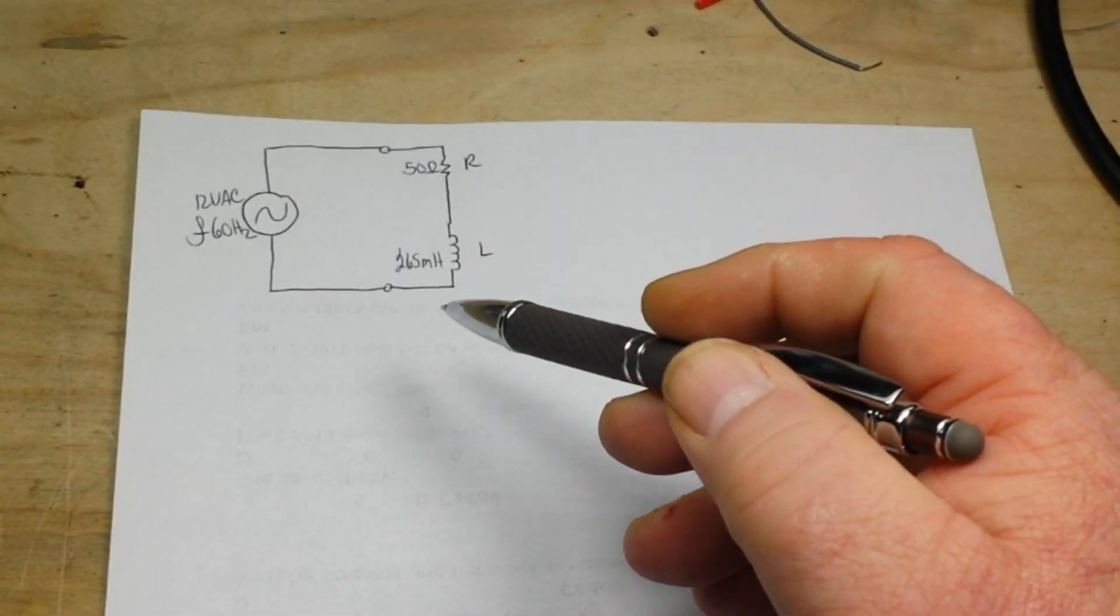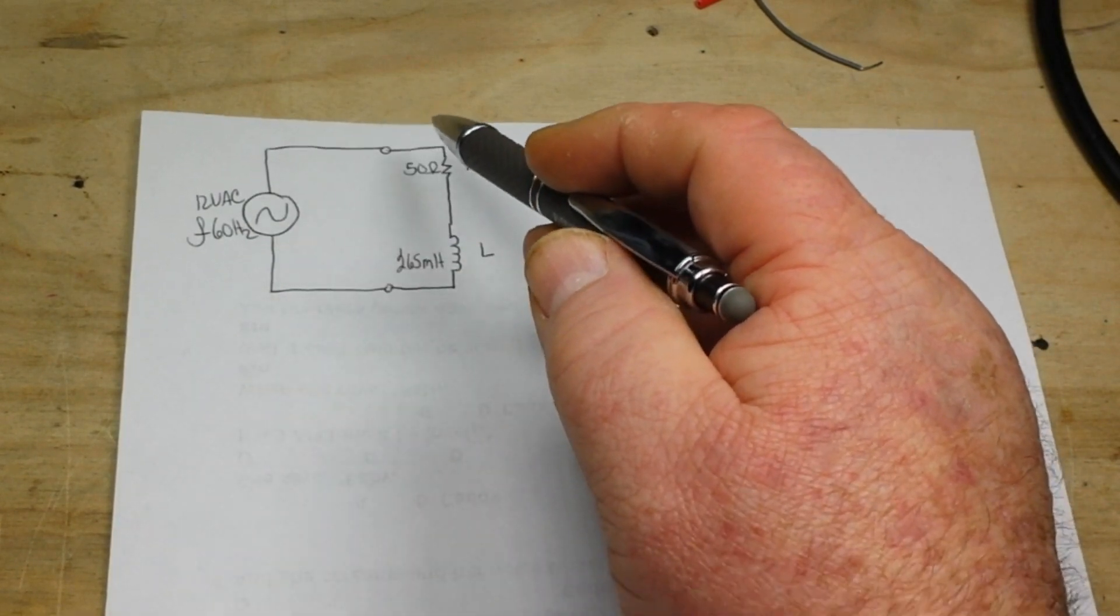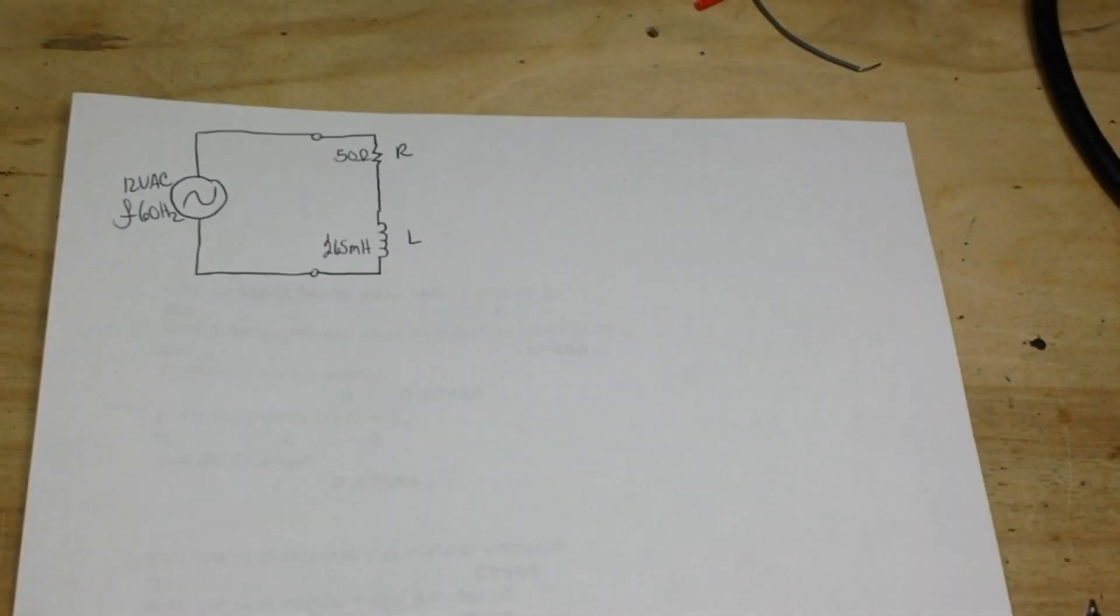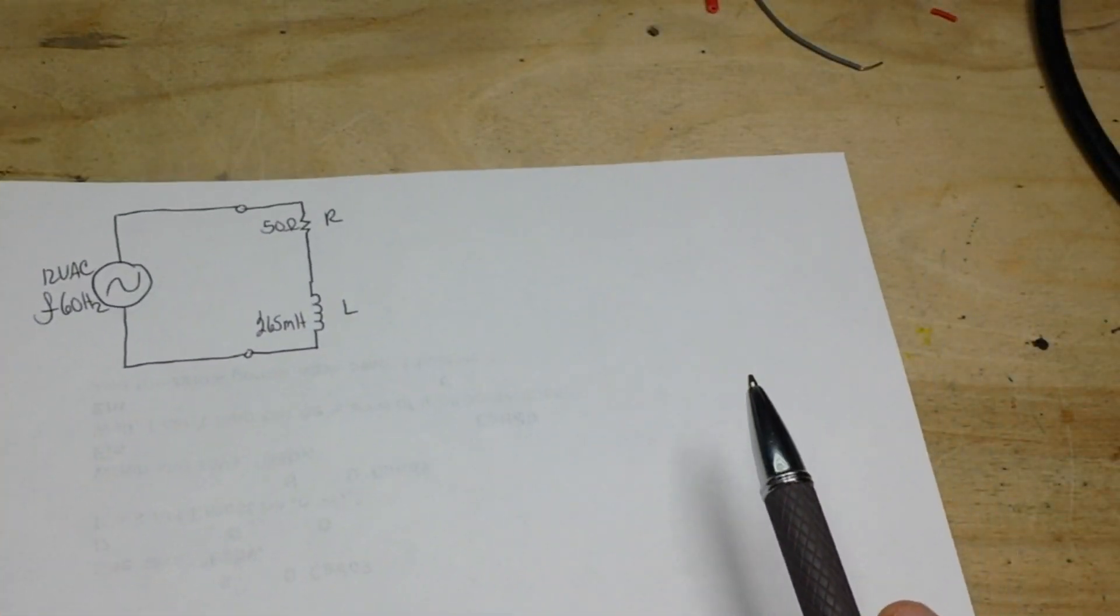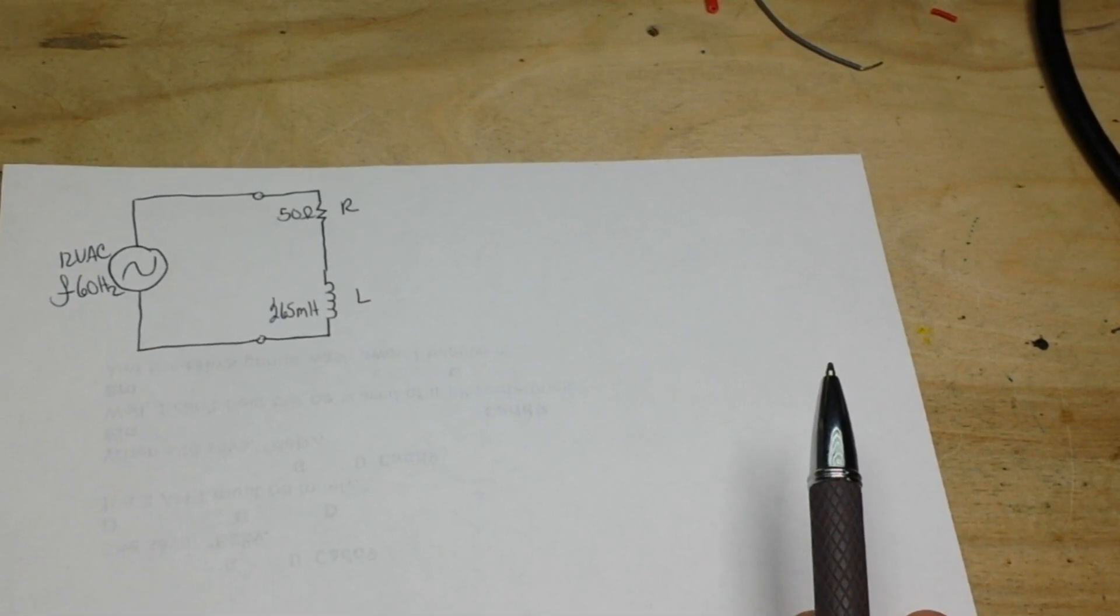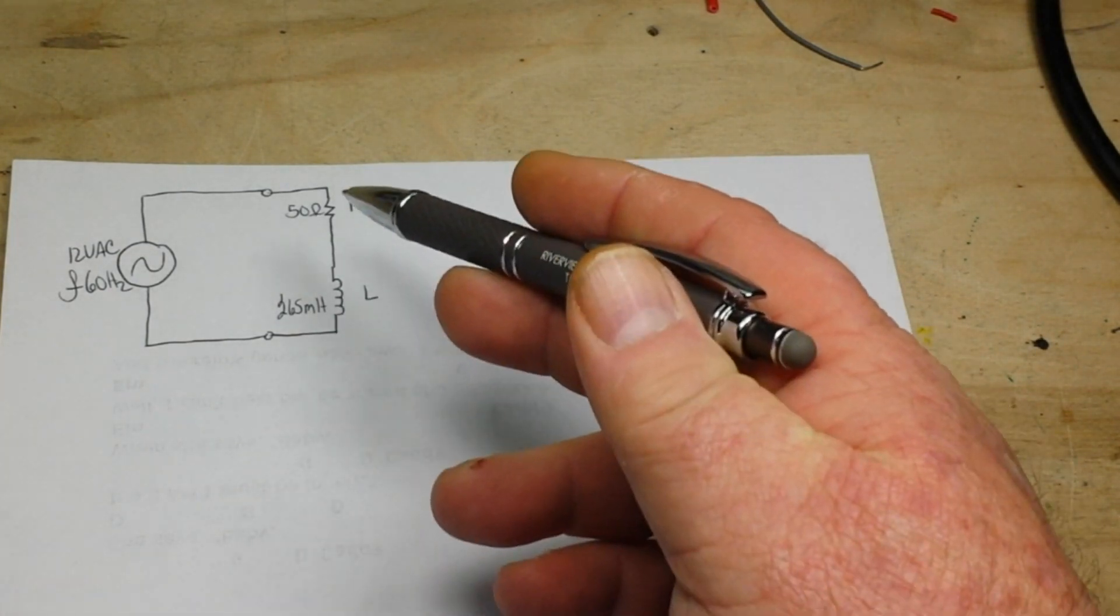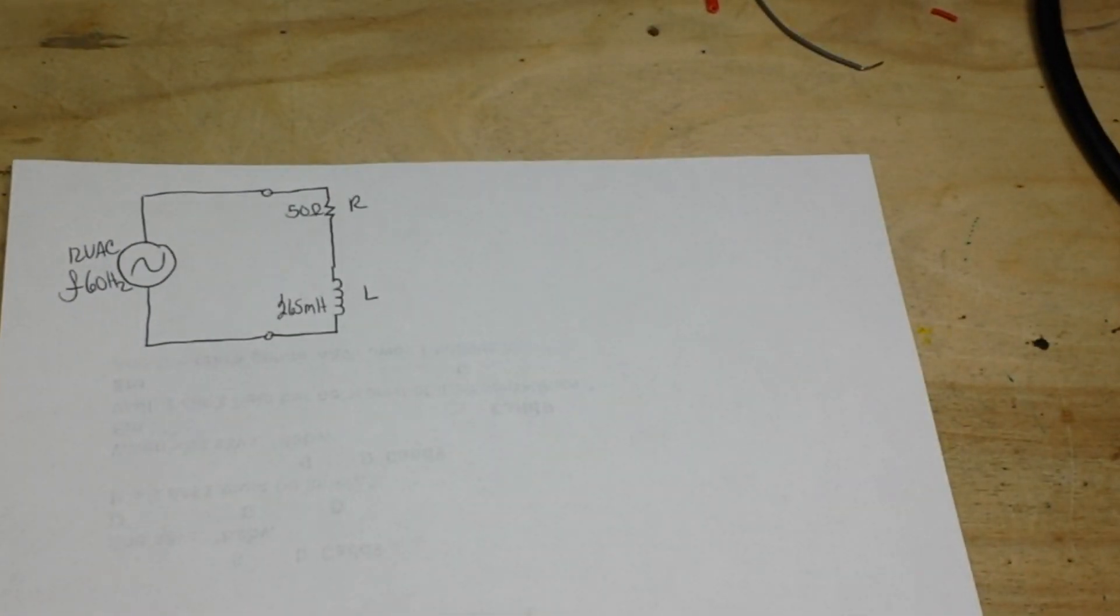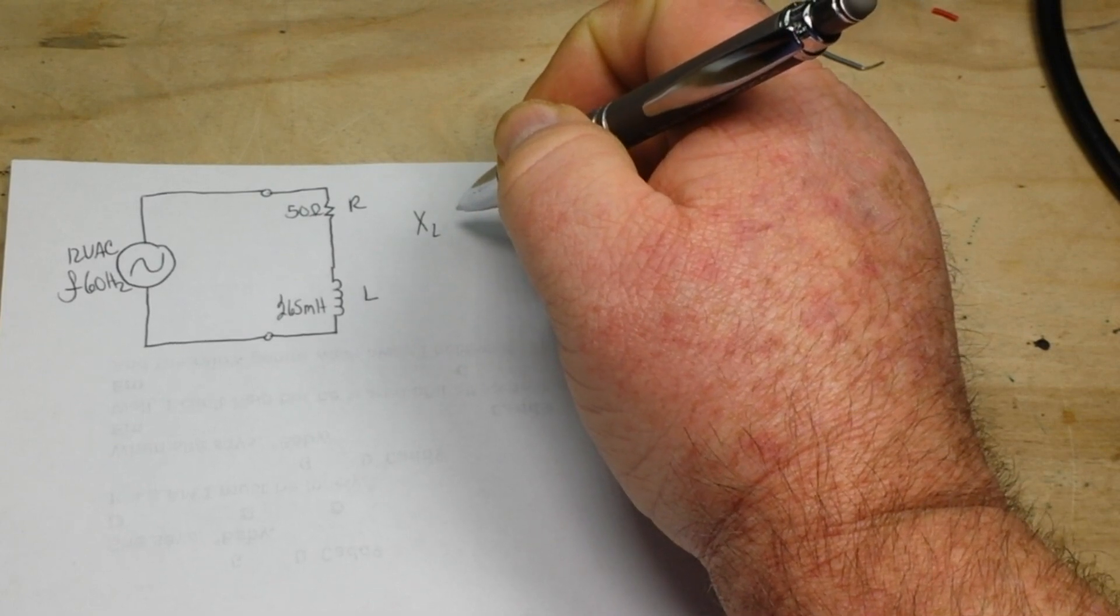First of all, let's take a look at this simple series RL circuit. We have an AC voltage input, 12 volts AC at 60 Hertz, feeding through a 50 ohm resistor and a 265 millihenry inductor. If we want to talk about this circuit, the first thing we need to do is calculate the reactance of the inductor.